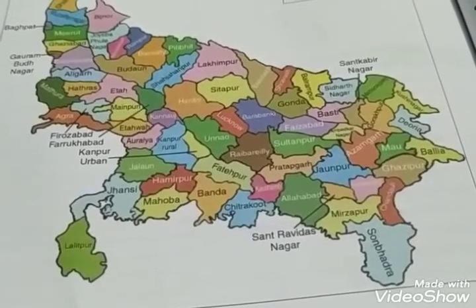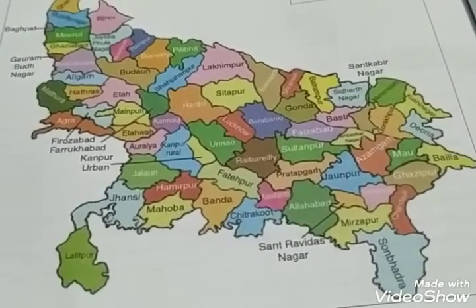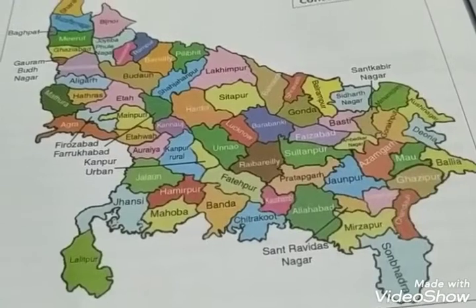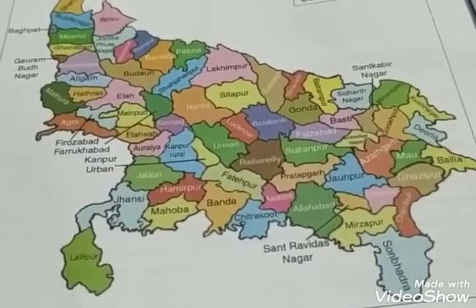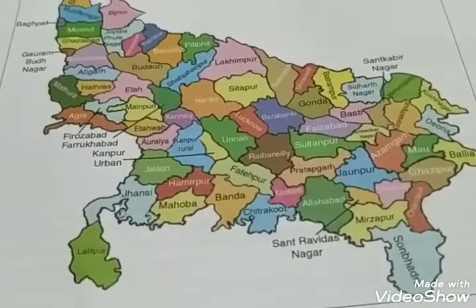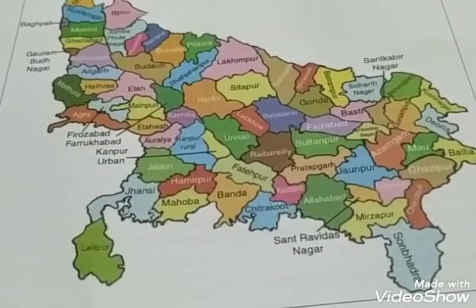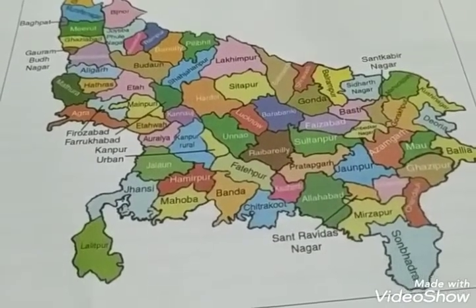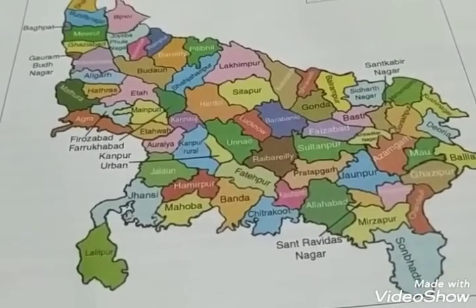Voters who are 18 years or older elect the MLAs. These elected members are called Members of the Legislative Assembly, which forms the state legislature, and collectively they form the state government.